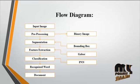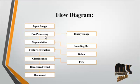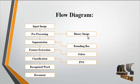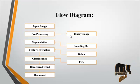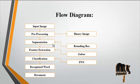Now we discuss the flow diagram for the process. First, the input image is taken from the dataset. Then the input image undergoes pre-processing. In pre-processing, the first step is binary conversion — the input image is converted into binary form. The binary image contains only two values: ones and zeros. After binary conversion, the image undergoes segmentation.